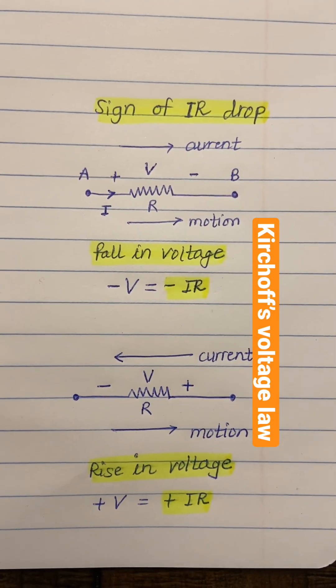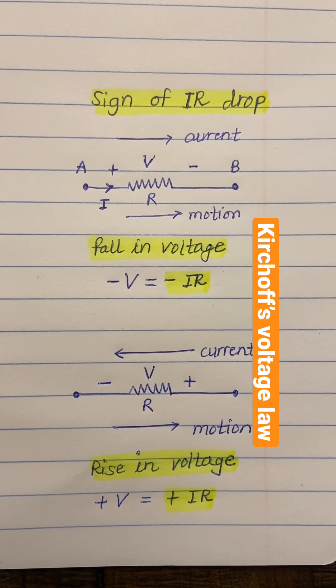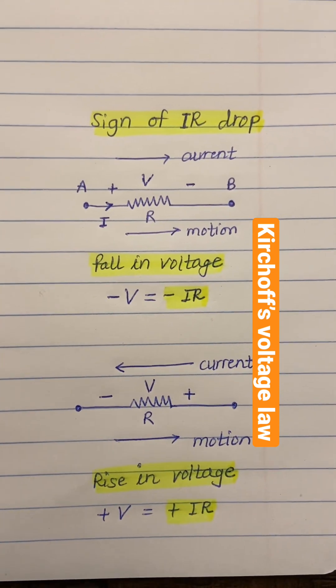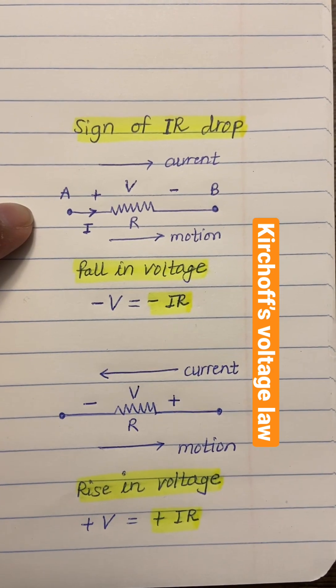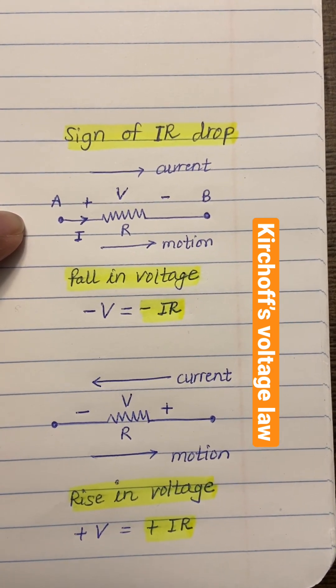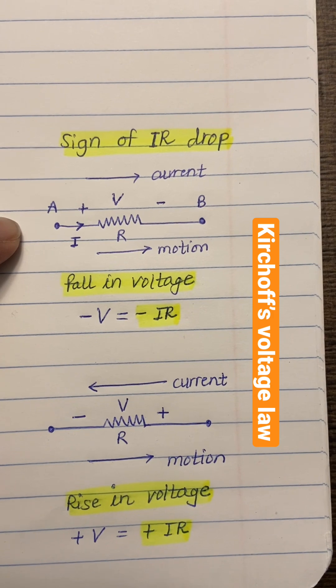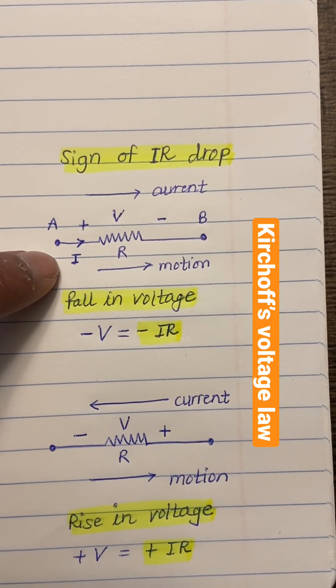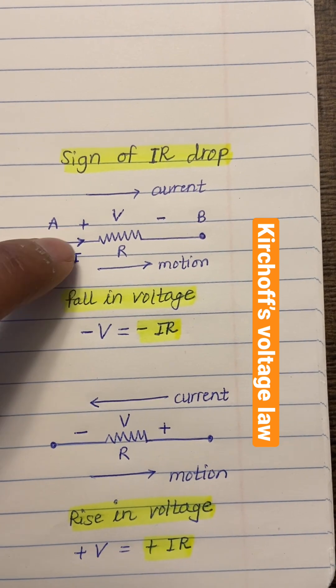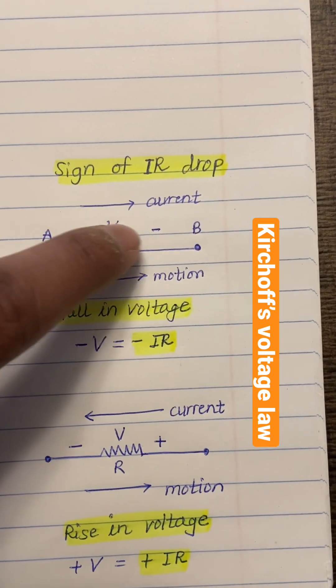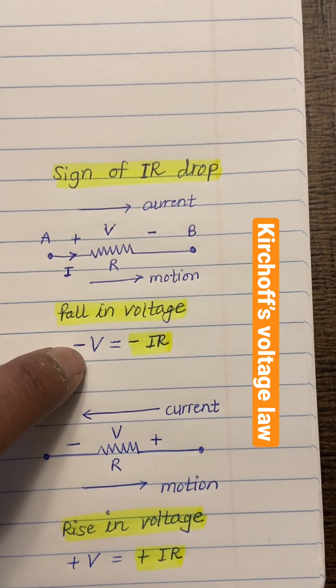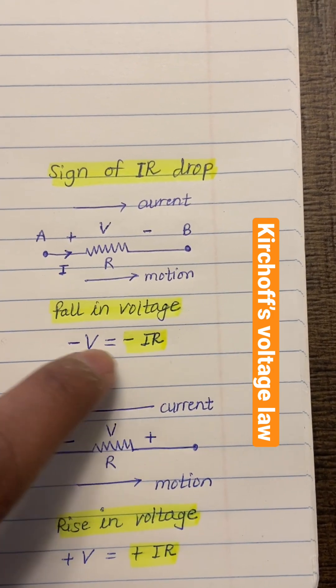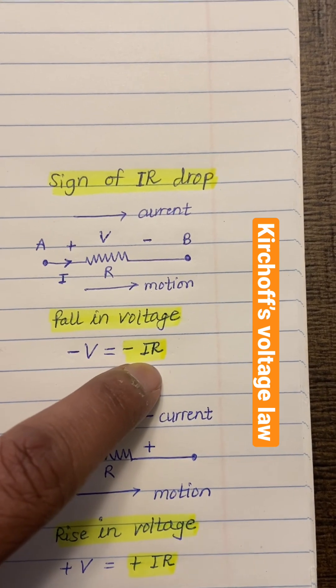Let's consider how to find out the sign of IR drop while applying Kirchhoff's voltage law. On the top, you're seeing here if the direction of the current is towards the right-hand side, as we're showing here, there will be a fall of voltage. So here there will be plus, there will be minus. Hence the sign of the IR drop will be minus, so -V = -IR.